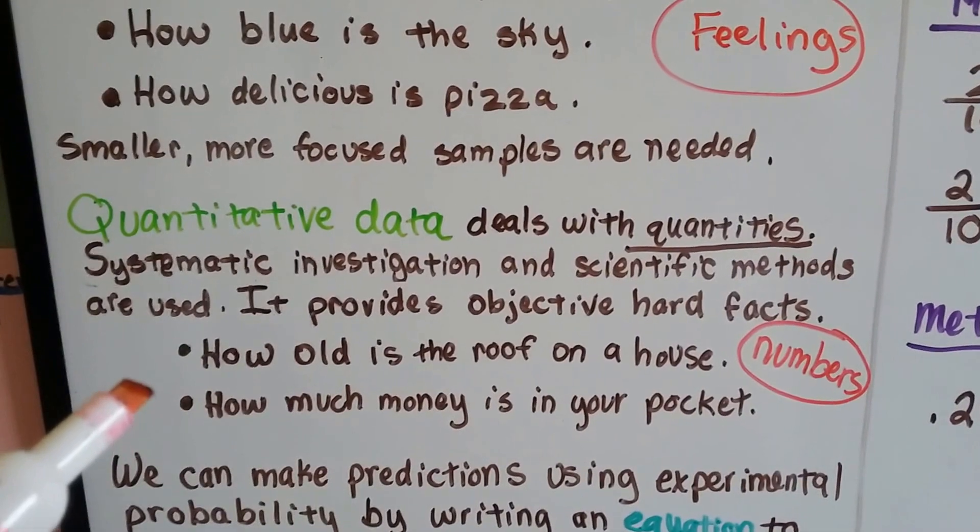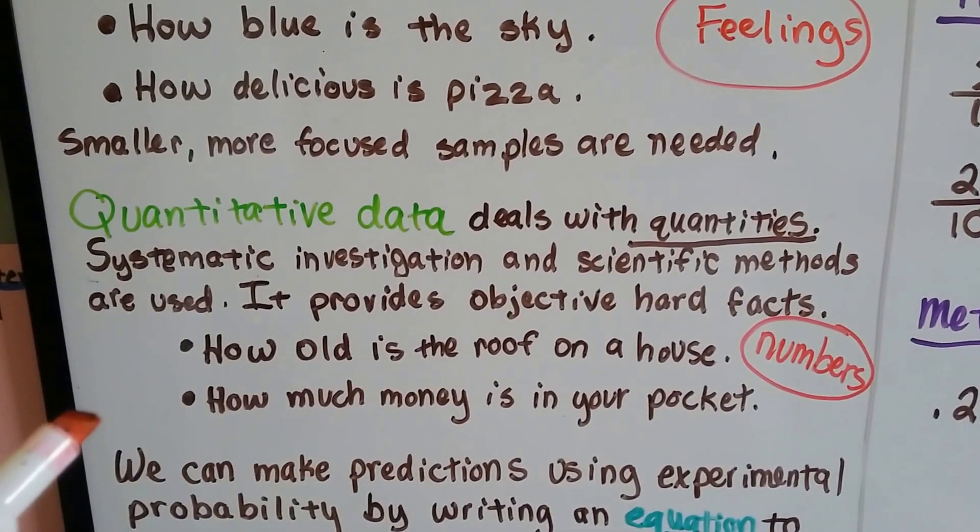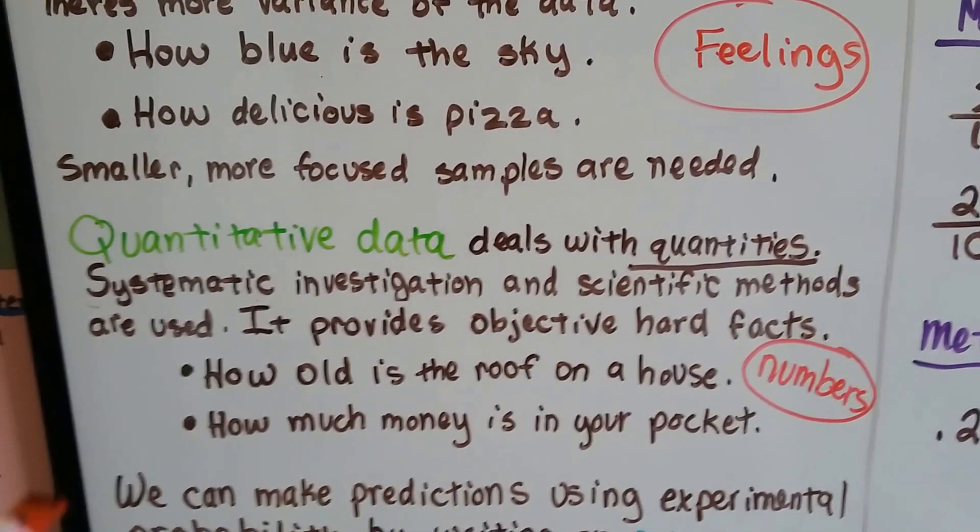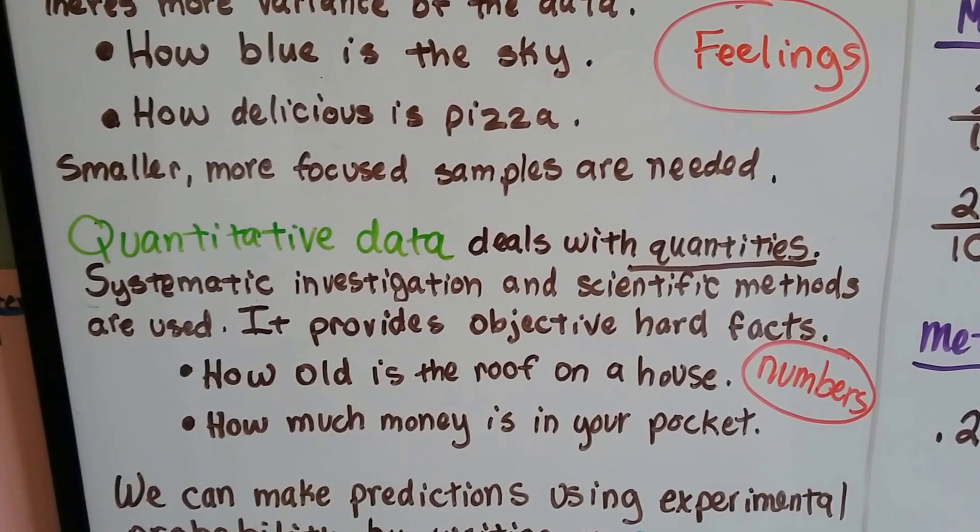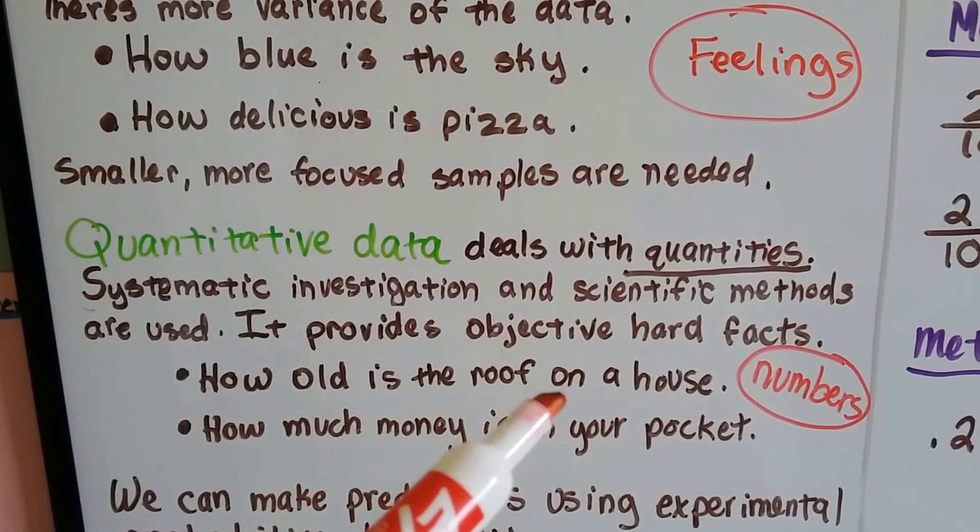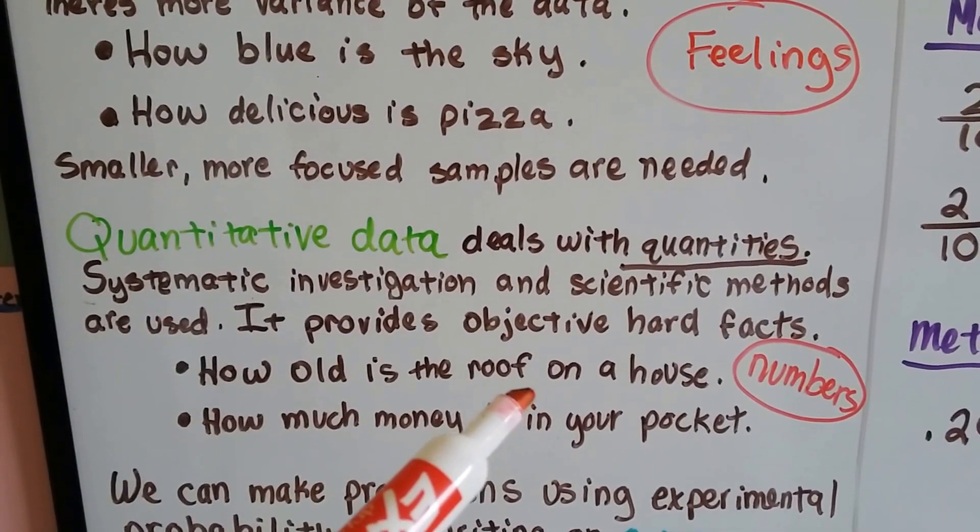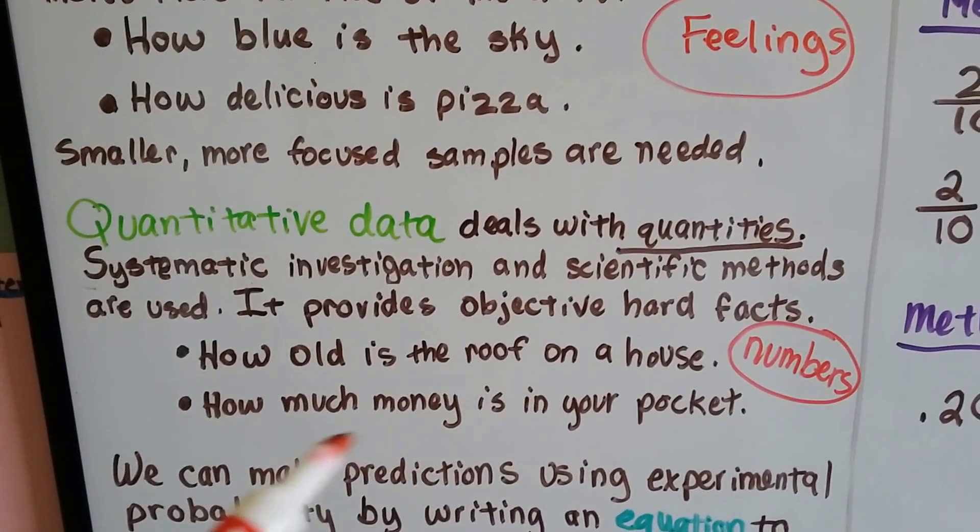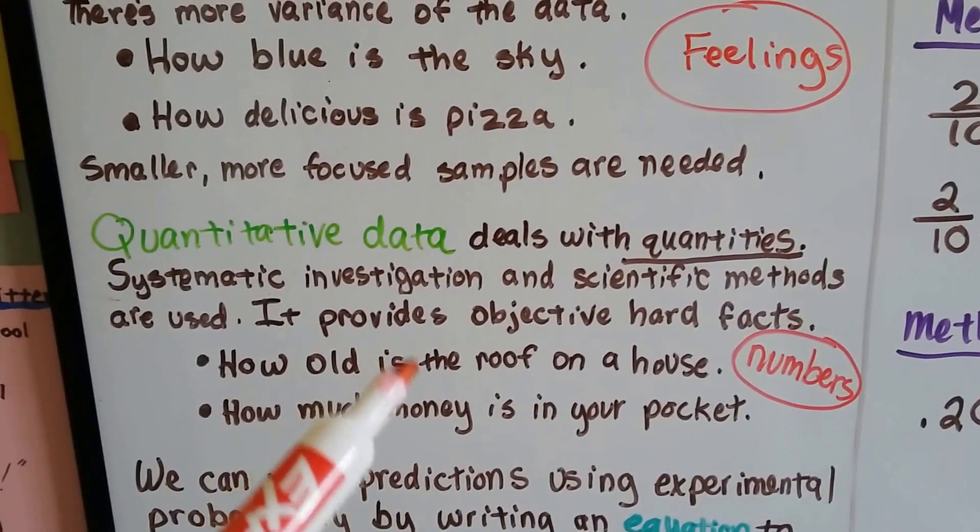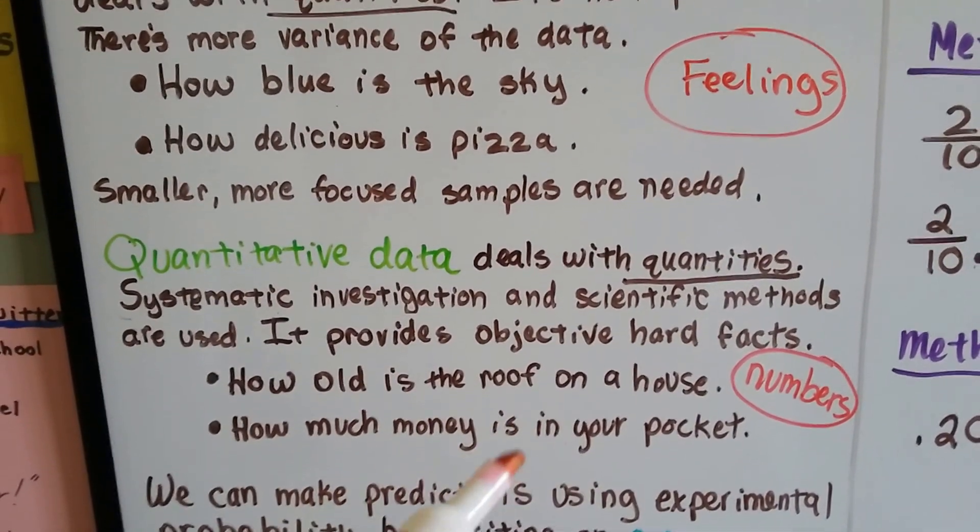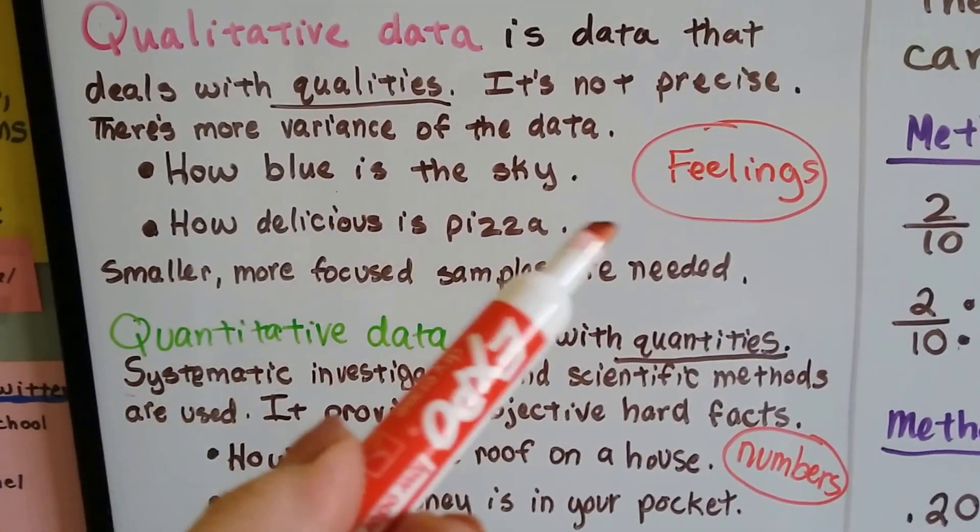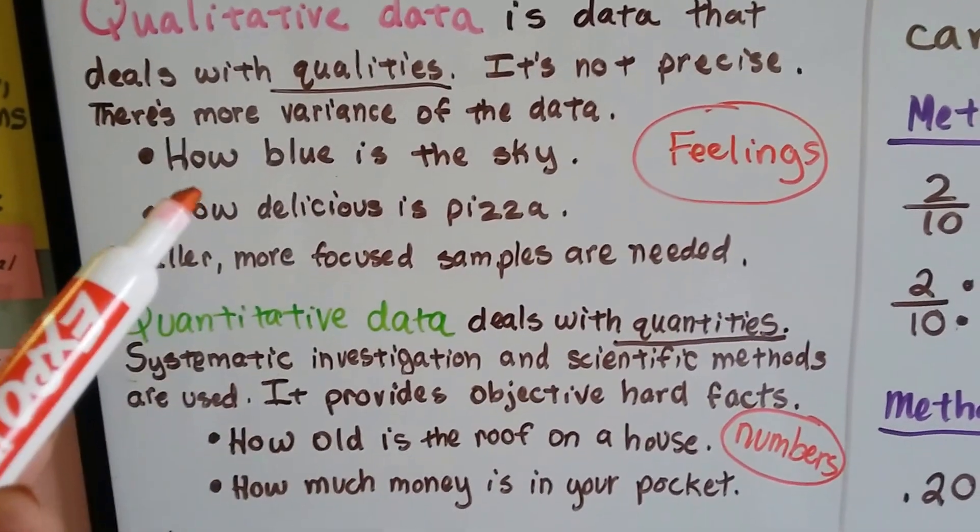Quantitative data deals with quantities. Systematic investigation and scientific methods are used. It provides objective, hard facts. How old is the roof on the house? Well, you can say the actual date and how old it is because you would have a receipt or something of when the new roof was put on, or how much money is in your pocket. You can actually count it. So those are numbers that can be actually proven and counted. And the qualitative ones are more feelings and qualities of it.